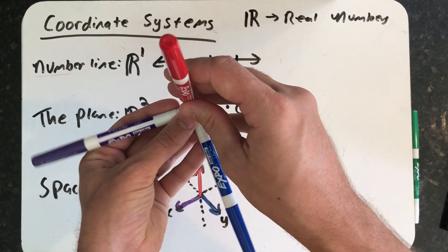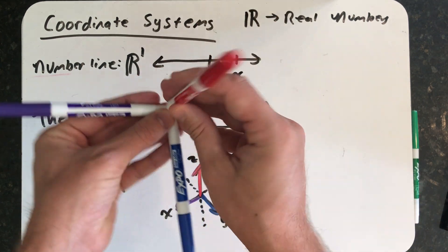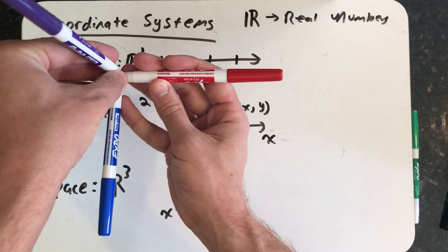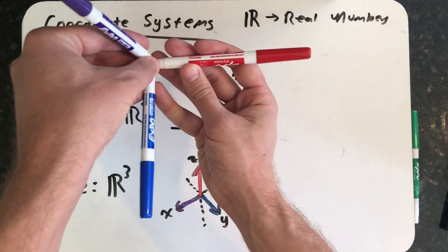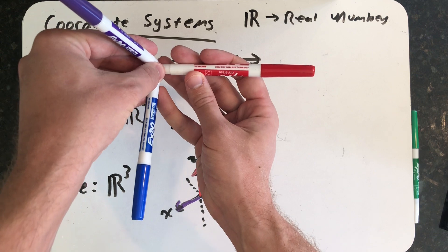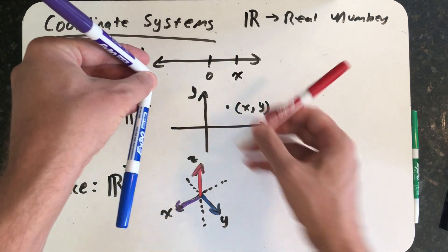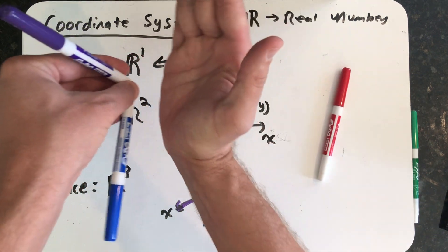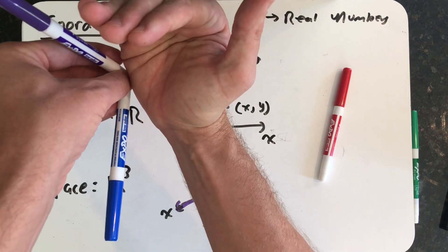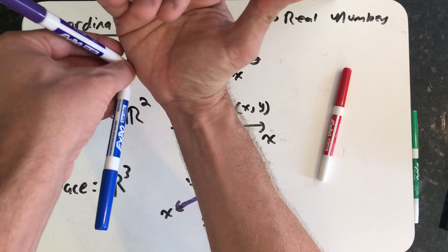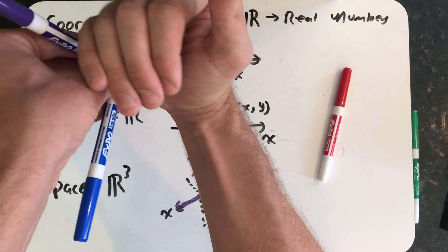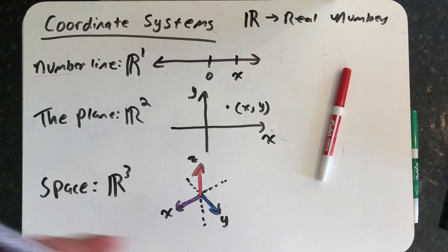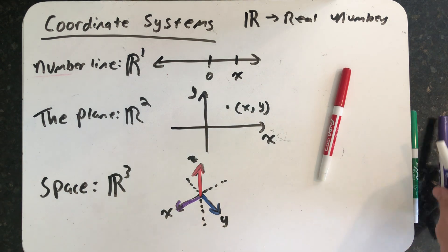The z-axis is formed by curling my fingers from the purple marker to the blue marker — from x to y — and there I'd see the z-axis coming straight up towards the camera. That's a right-handed coordinate system. What that lets me do is imagine this coordinate system being turned, and the red marker is still the z-axis, the purple marker is still the x-axis, and the positive z-axis is still formed by curling my fingers from x to y — a right-handed coordinate system.